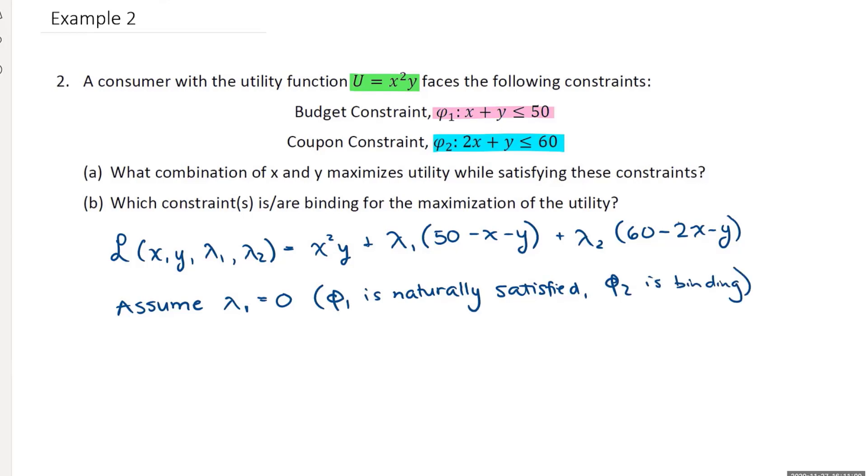So we're going to ignore constraint 1 and I'm going to do my partial derivatives. Now sometimes I do all the partial derivatives and then I decide which one to ignore. So you'll see me do it both ways.